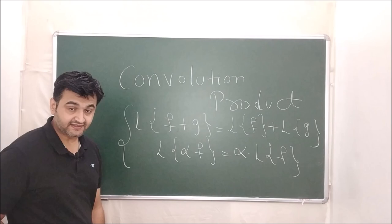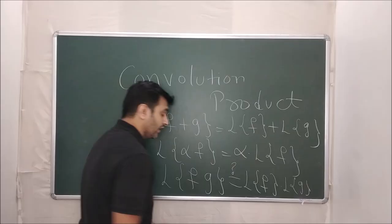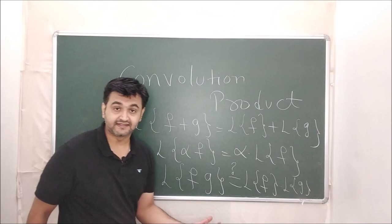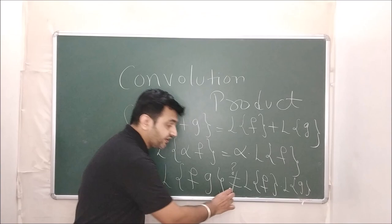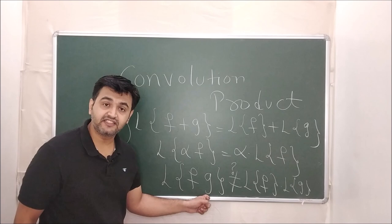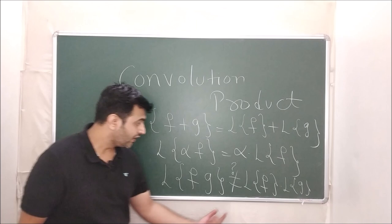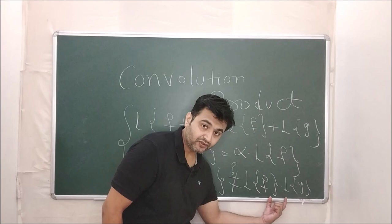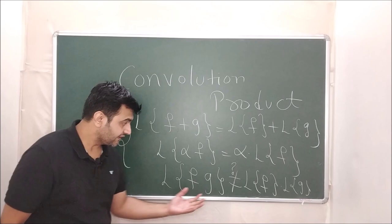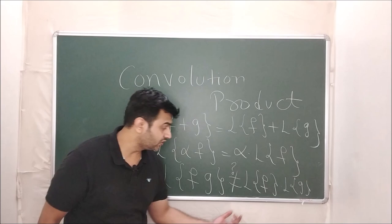The question arises: how does Laplace behave with the product? That means, is Laplace of a product equal to the product of Laplace's? The answer is this is not true in general. A simple counter-example: take f equal to 1 and g equal to 1. Then f·g = 1, so Laplace of 1 is 1/s, and Laplace of 1·1 is also 1/s, but Laplace of the product gives 1/s², not 1/s·1/s = 1/s². Wait — we get 1/s² on one side and 1/s on the other, so they are not equal.